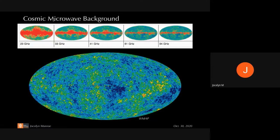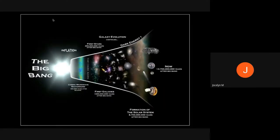The main thing you notice is that it's clumpy — there are spots with more red and spots with more blue. Based on the clumpiness of this measurement, one can infer the composition of the universe: how much is dark matter versus visible matter. We think the universe started with a Big Bang, and roughly 400,000 years after that Big Bang was the last time this cosmic microwave background radiation interacted with anything else. Since then it's expanded and cooled until we measure it today, 13.7 billion years after the Big Bang.